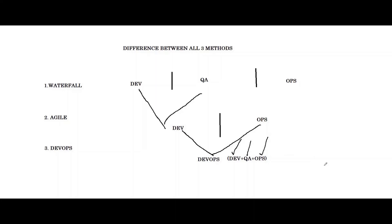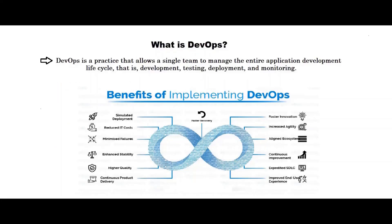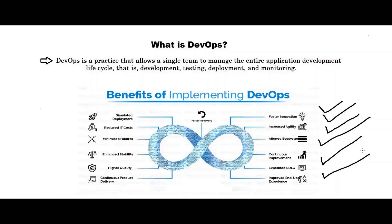Developers write the code, quality assurance people write test cases, and the operations team manages the infrastructure. So what is DevOps? DevOps is a practice that allows a single team to manage the entire application development lifecycle — that is development, testing, deployment, and monitoring. The benefits of DevOps include accelerated innovation, agility and speed, flexibility, IT efficiency, reduced IT cost, and continuous product delivery.